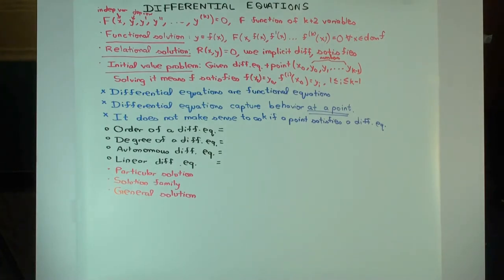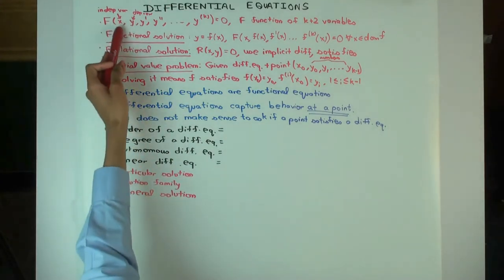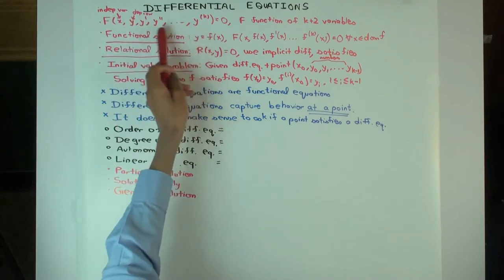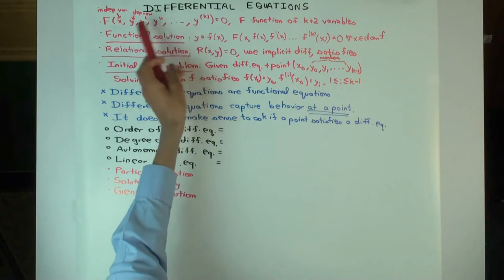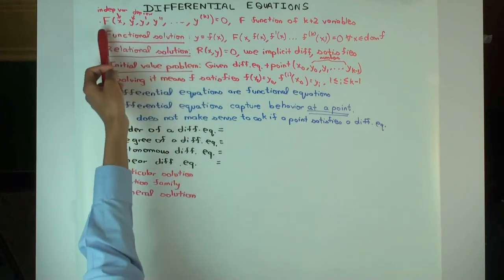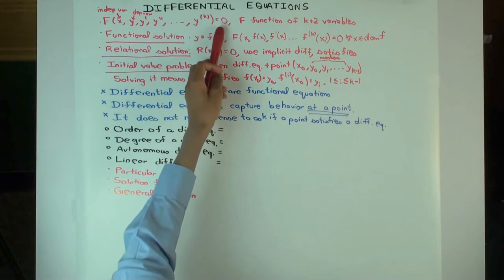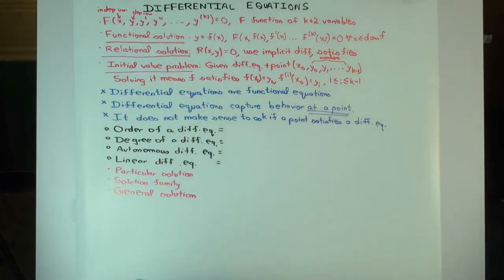Differential equations are usually written as saying there is some kind of expression in terms of an independent variable and a dependent variable. So x is the independent variable, y is the dependent variable, and the derivatives of that dependent variable — y, y prime, and so on — and there is some kind of relation between them, which means there is some capital F of these which equals zero. That just means there is some expression involving these which is zero.